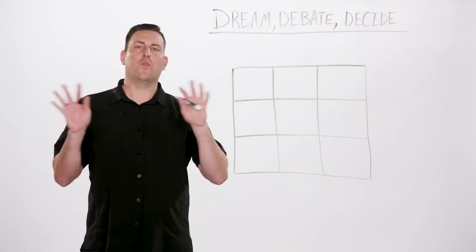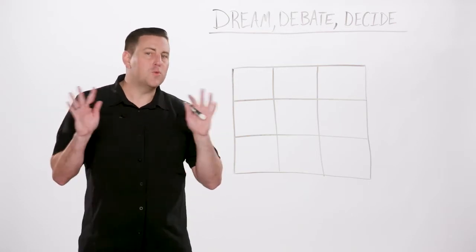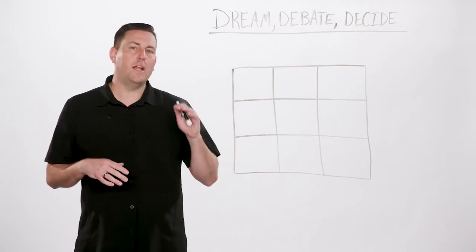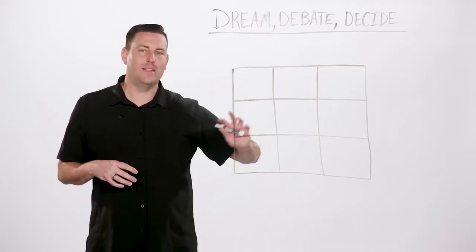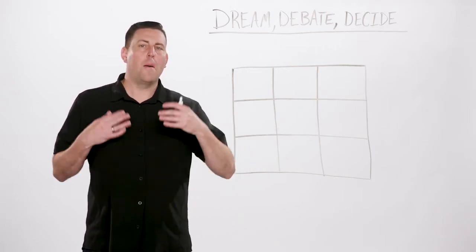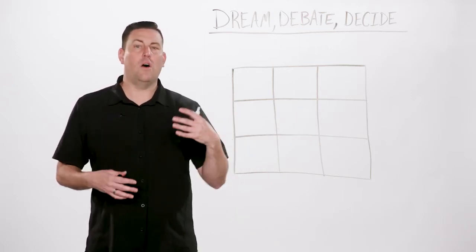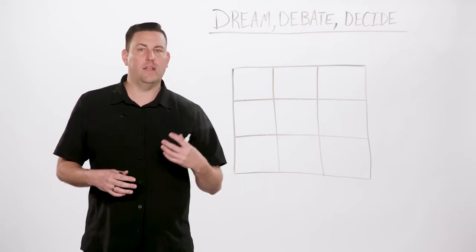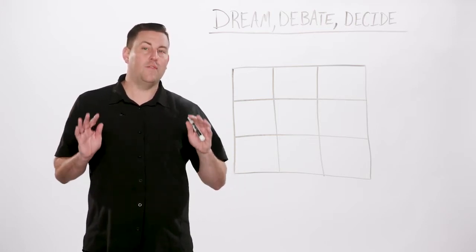First, dream. To dream, we just want to write a potential solution in each of the boxes on this nine box grid. At this point, you're brainstorming possible ways to resolve a challenge or a conflict. No idea should be off the table.